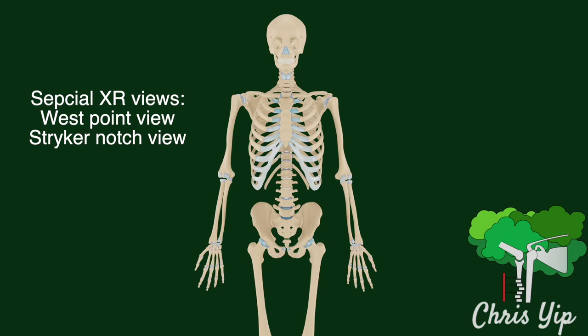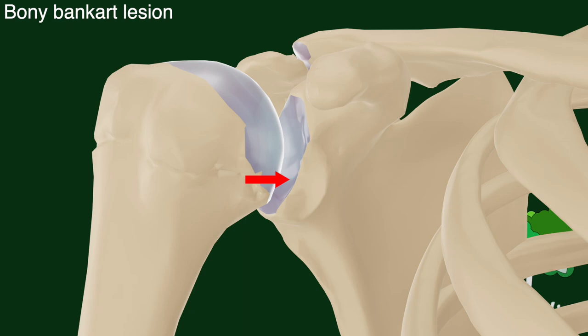There are special x-ray views to identify bony pathologies related to traumatic anterior dislocations of the shoulder. The two most important bony pathologies are the bony Bankart lesions in the anterior glenoid and the Hill-Sachs defect in the posterior superior aspect of the humerus.